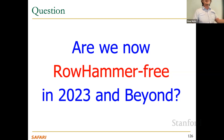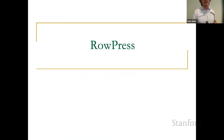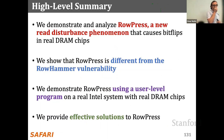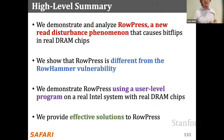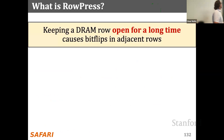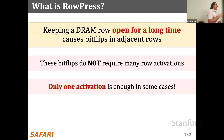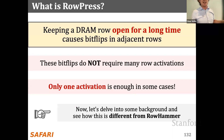Now I'll talk about RowPress — a new read disturbance phenomenon we demonstrated at ISCA that causes bit flips in real DRAM chips. It's different from RowHammer but amplifies RowHammer vulnerability. The key idea: whereas RowHammer involves repeatedly activating and closing a row, RowPress keeps the DRAM row open for much longer. In some extreme cases, violating timing parameters, only one activation is enough — you activate one row, wait 30 milliseconds, and charge gets depleted in an adjacent row. This is fascinating from a device perspective.